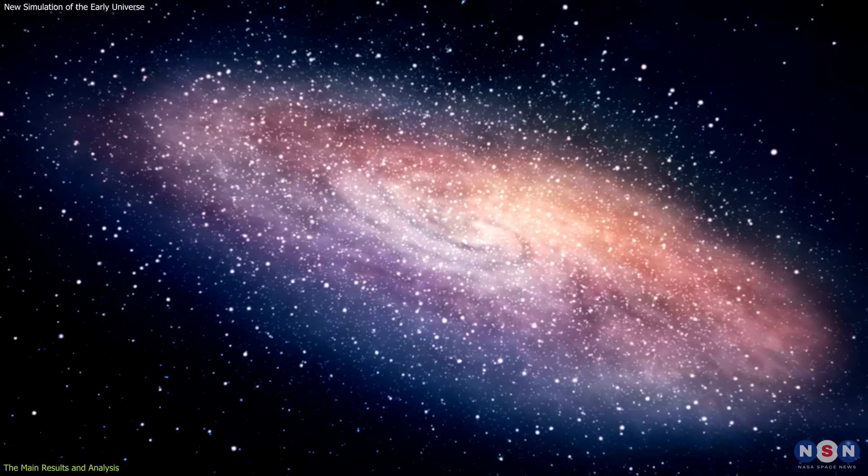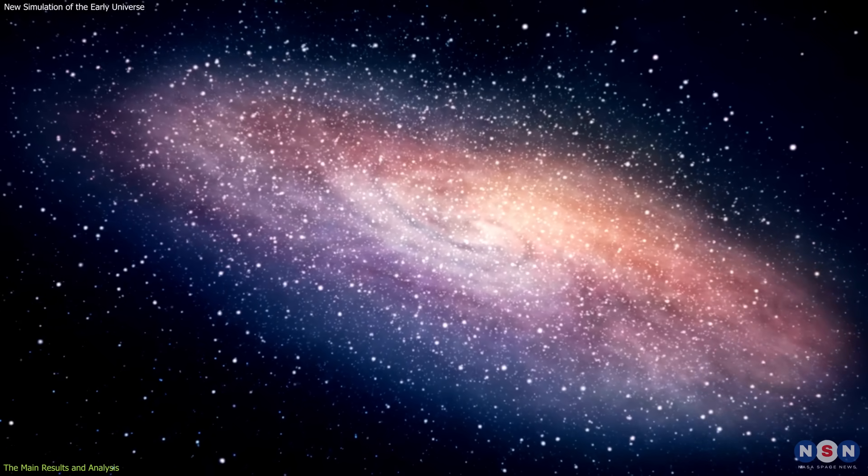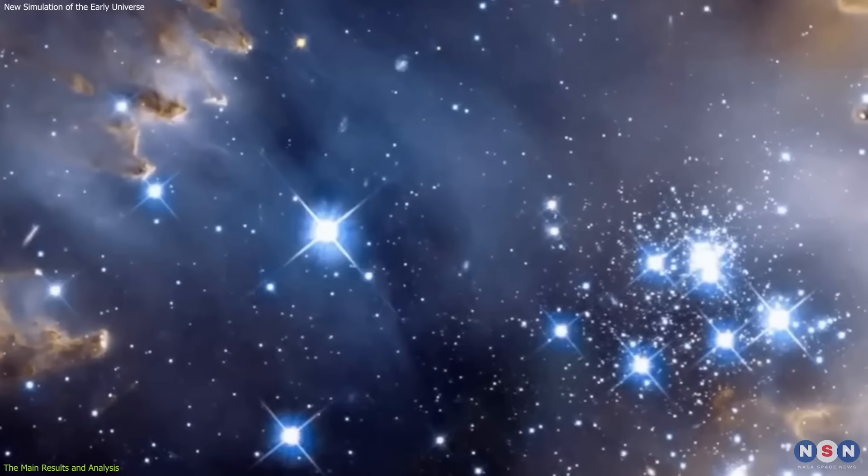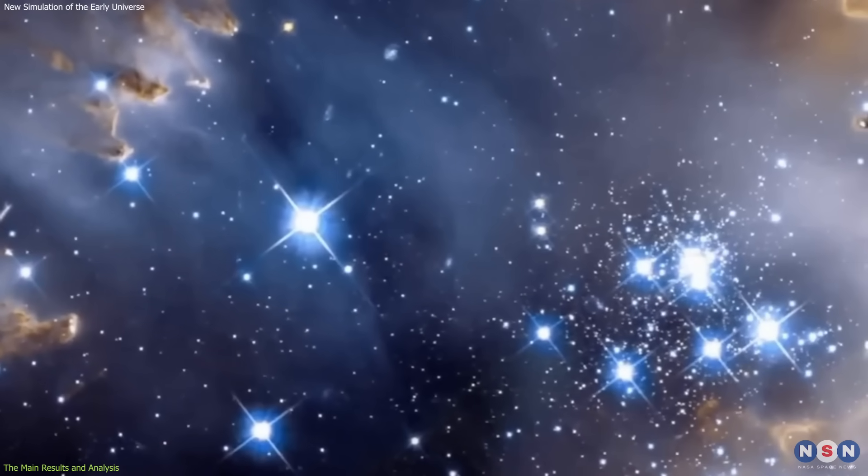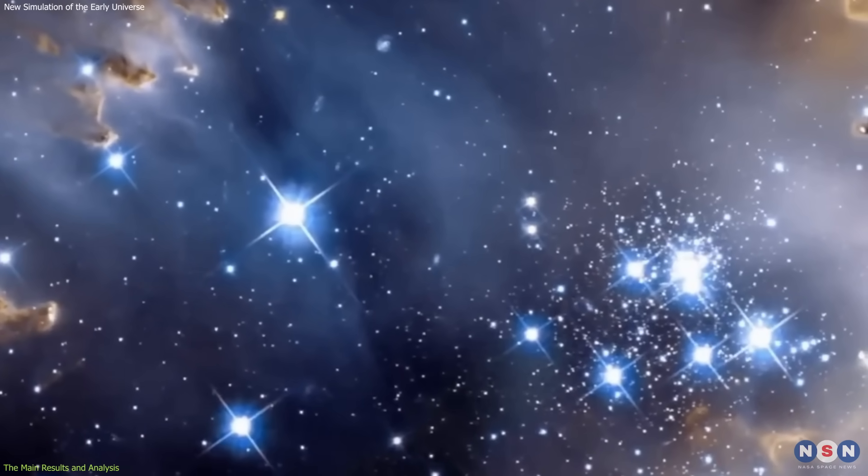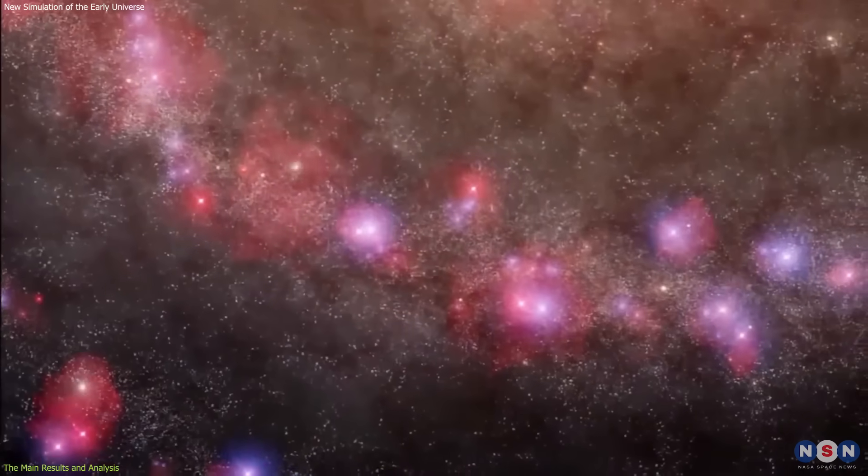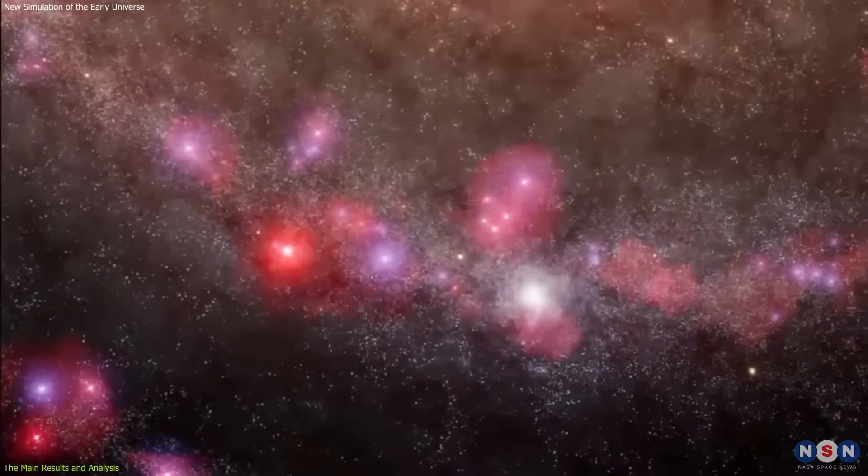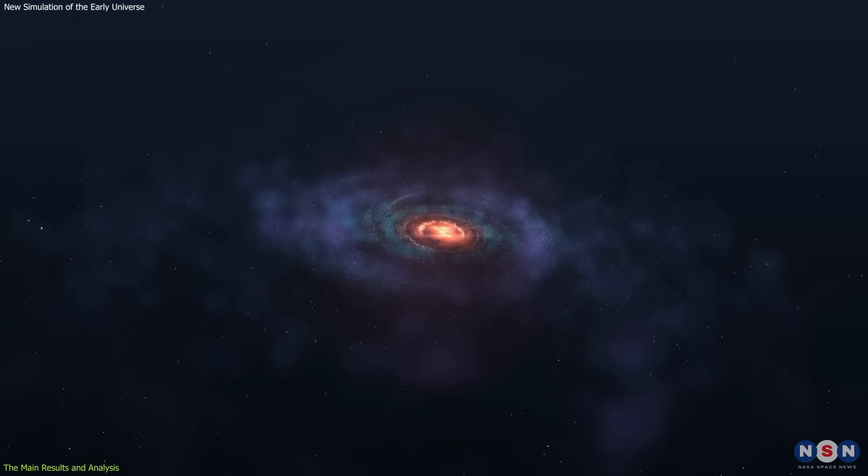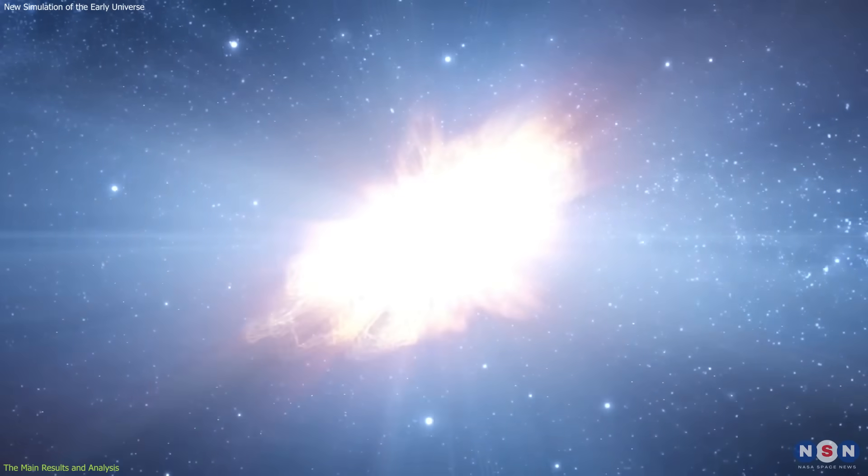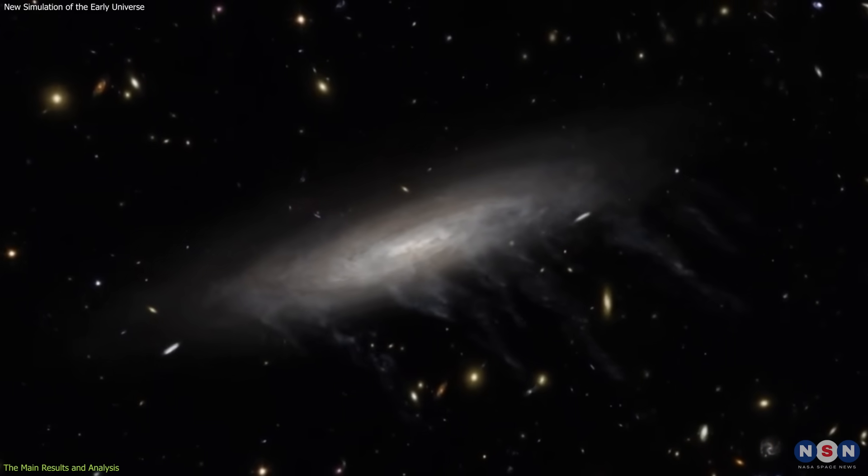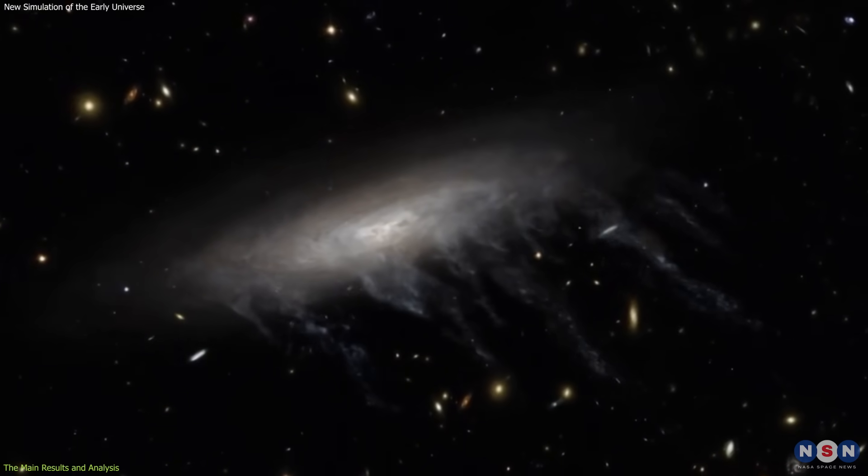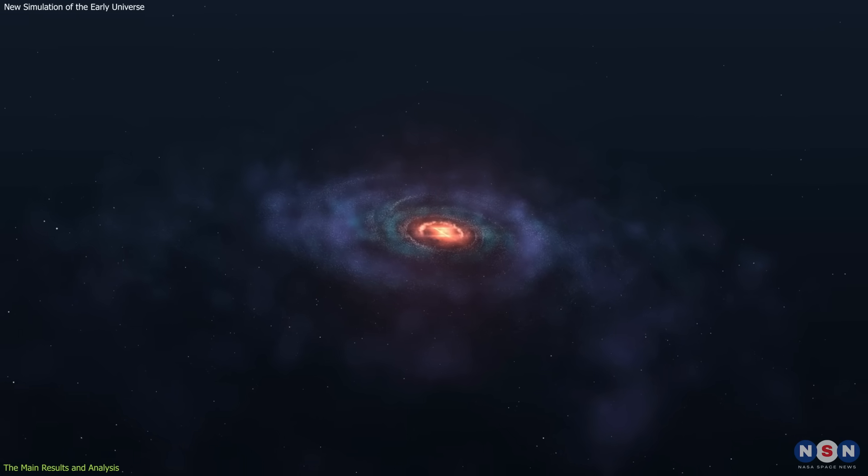They also have similar star formation histories as later galaxies do. They start forming stars very early on, at around 300 million years after the Big Bang, and continue to form stars at a high rate until about 800 million years after the Big Bang. Then they experience a decline in star formation due to feedback effects from supernovae explosions or radiation from massive stars. These feedback effects can heat up or blow away gas from galaxies, preventing further star formation.